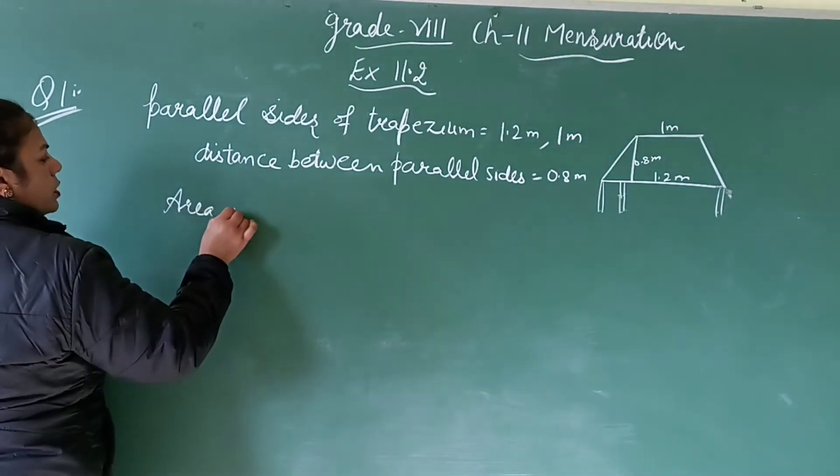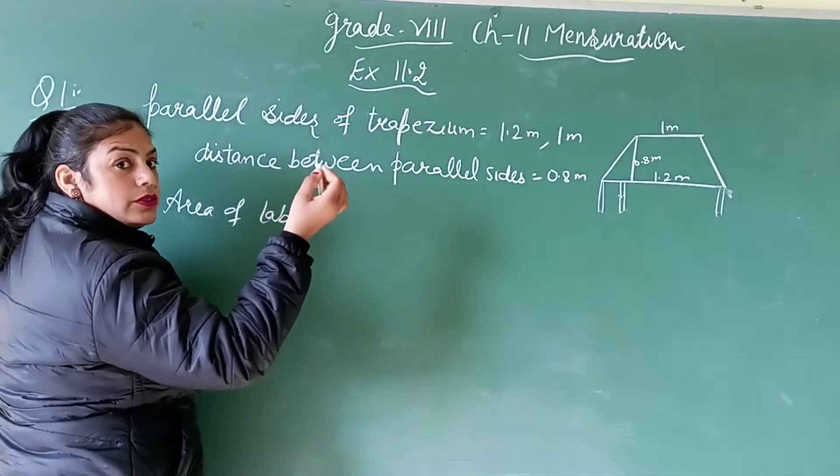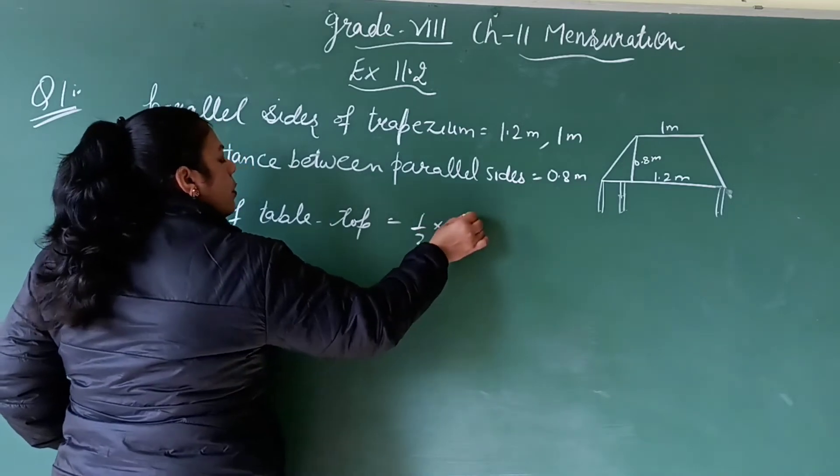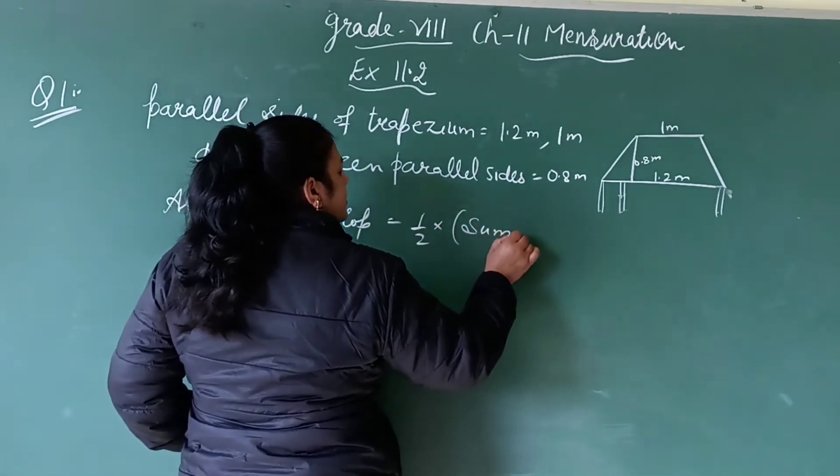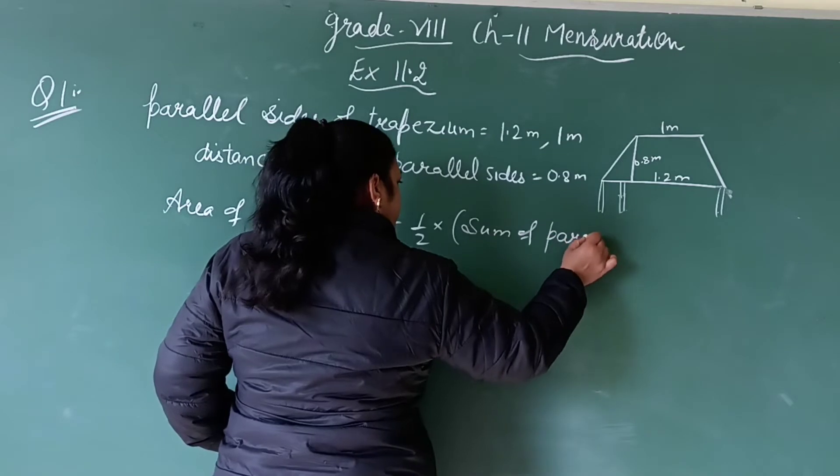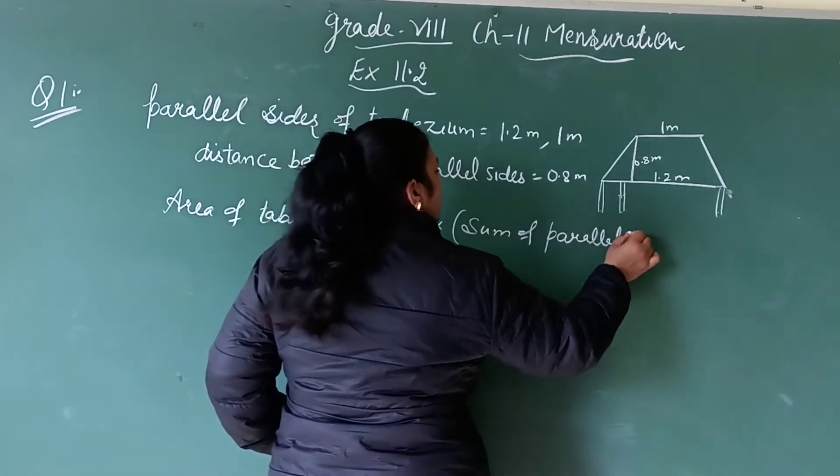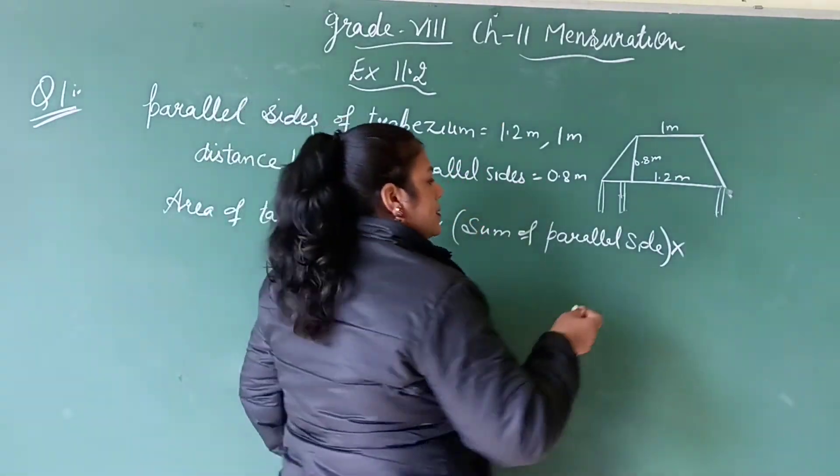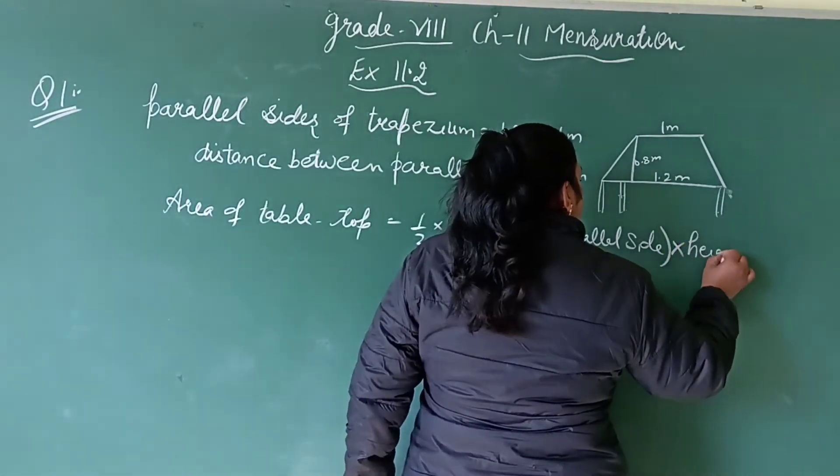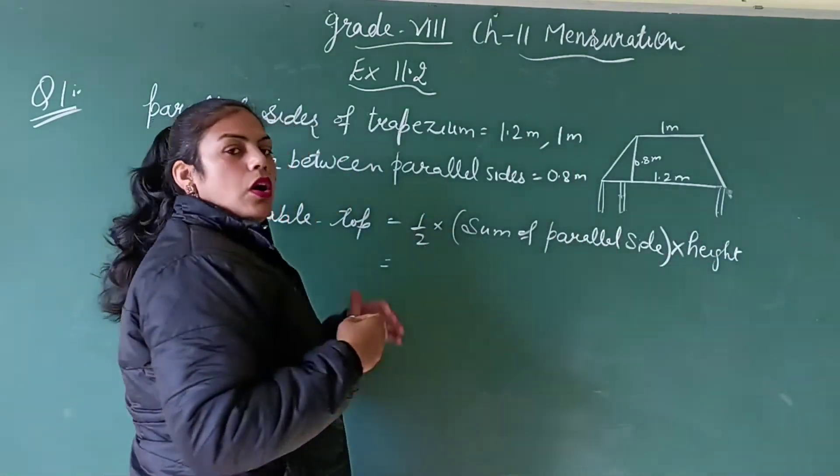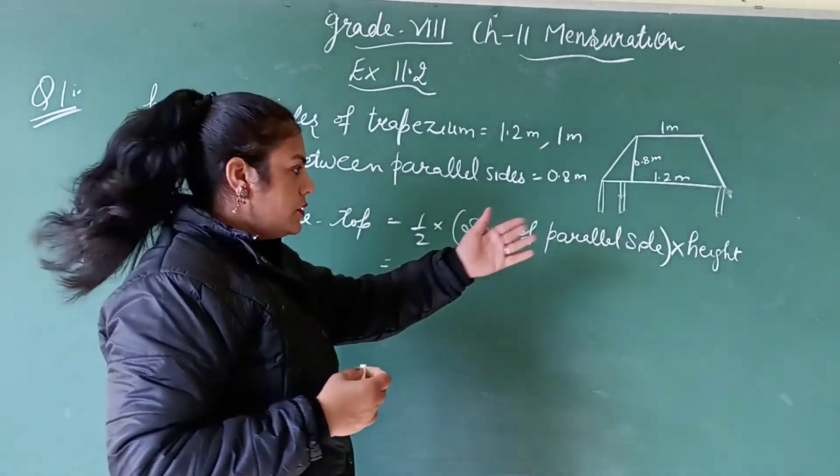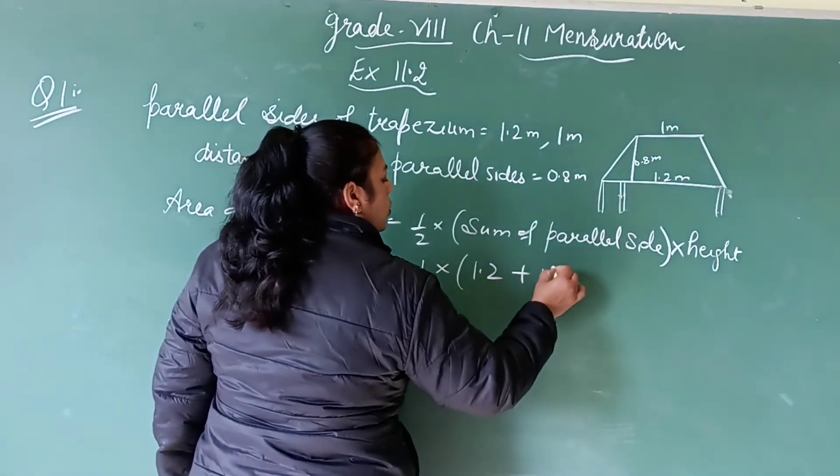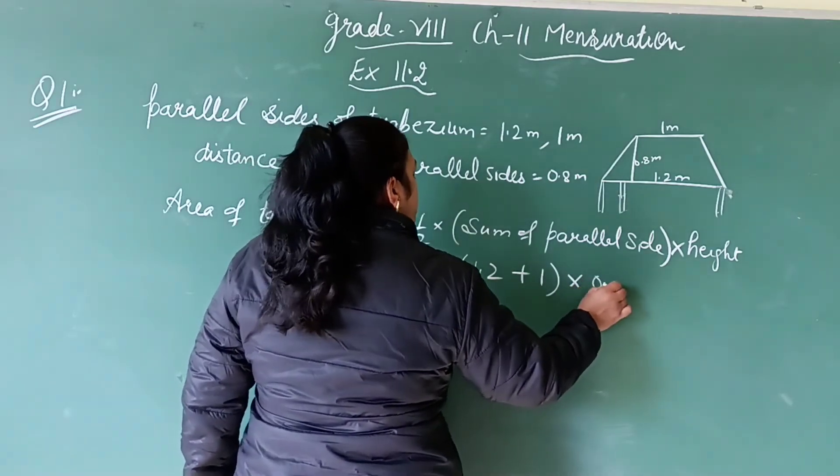And now we have to find its area. So area of table top, that is which is in trapezium shape, is equal to half into sum of parallel sides into height. Height means perpendicular distance between these two parallel sides.